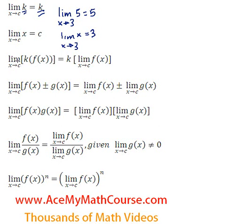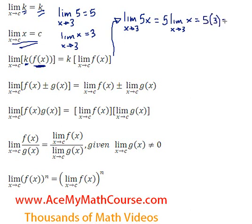And what if we have something like the limit as x approaches c of a constant multiplied by a function? In this case, we can actually take out the constant and multiply by the limit of just the function. So let me use a simple example. Let's say that I have limit as x approaches 3 of 5x. That's going to be equivalent to 5 times the limit as x approaches 3 of x. And because of this rule right here, we know that the limit as x approaches 3 of x is just 3. So we just have 5 times 3, which is 15. That's it.